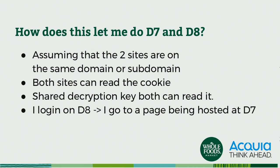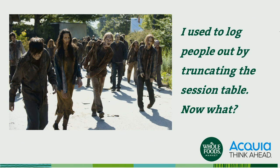How does this let me do D7 and D8? Assuming that the two sites are on the same domain or subdomain, then both sites can read this cookie. And as long as they both know how to decrypt it, they can both read it no problem — they both get the same key, they both have the same keyhole. The way we implemented this: we built our authentication system on D8. Any time you tried to log in on D7, it would actually kick you over to D8, you would log in, and then you would get bounced back to your original page on D7 to complete whatever action you wanted — like changing dietary preferences or adding a recipe favorite.